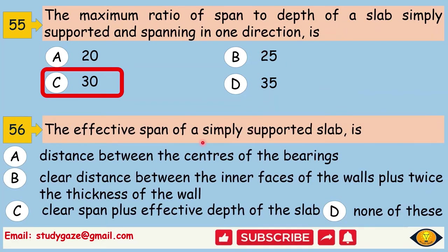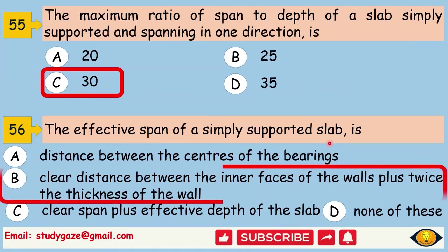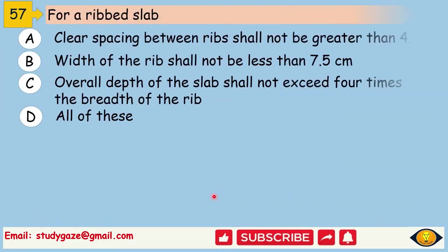The effective span of a simply supported slab is clear distance between the inner faces of the walls plus twice the thickness of the wall. For a ribbed slab, clear spacing between the ribs shall not be greater than 4.5 cm. Width of the ribs shall not be less than 7.5 cm. Overall depth of the slab shall not exceed 4 times the width of the rib. So, all the options are correct for a ribbed slab.